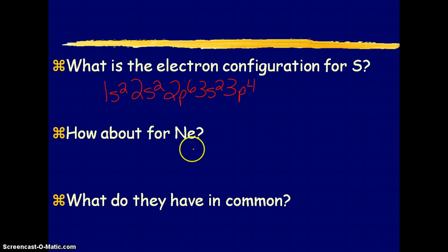Now let's write the electron configuration for neon. So again we start at 1s2, 2s2, 2p6.